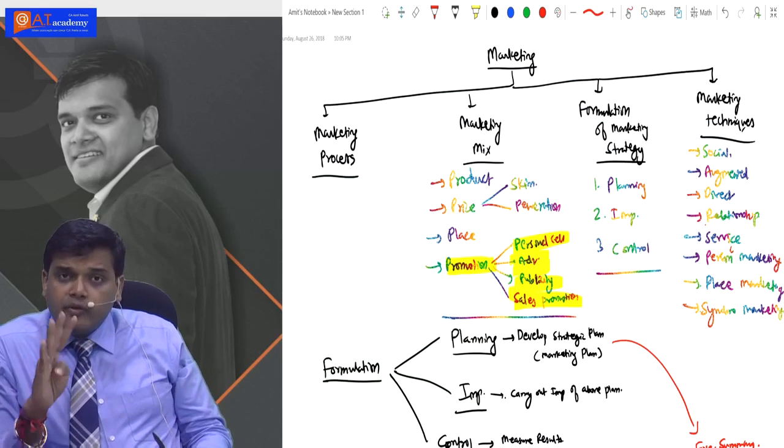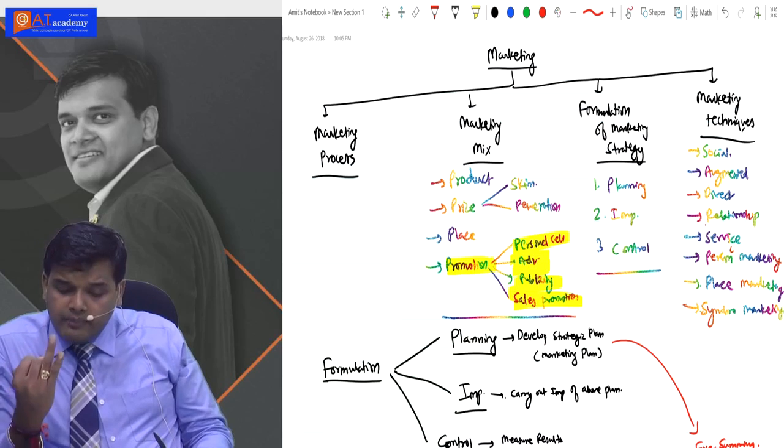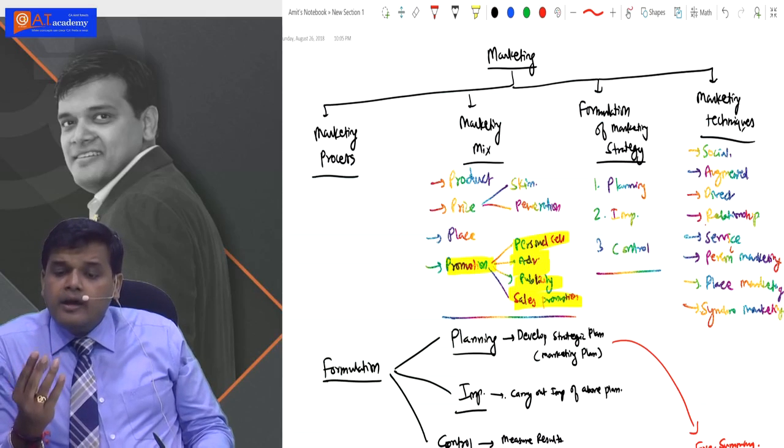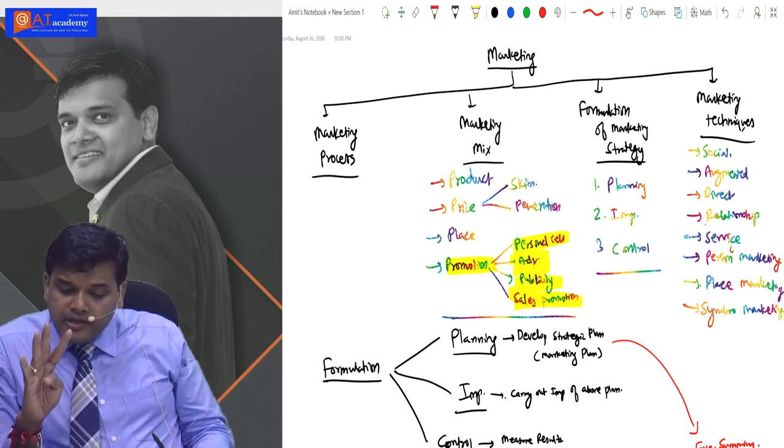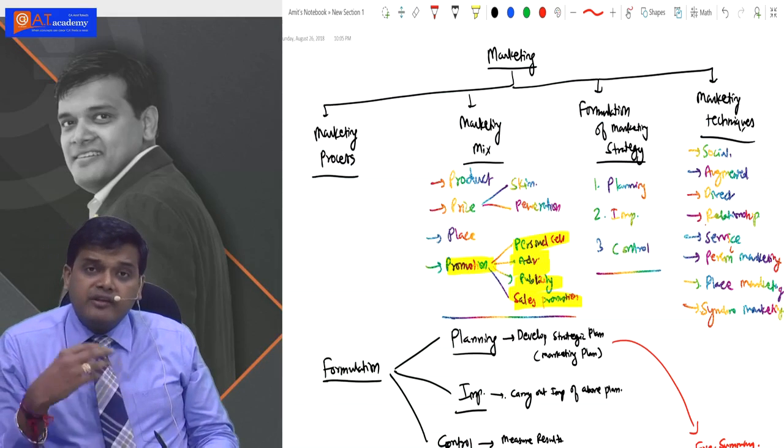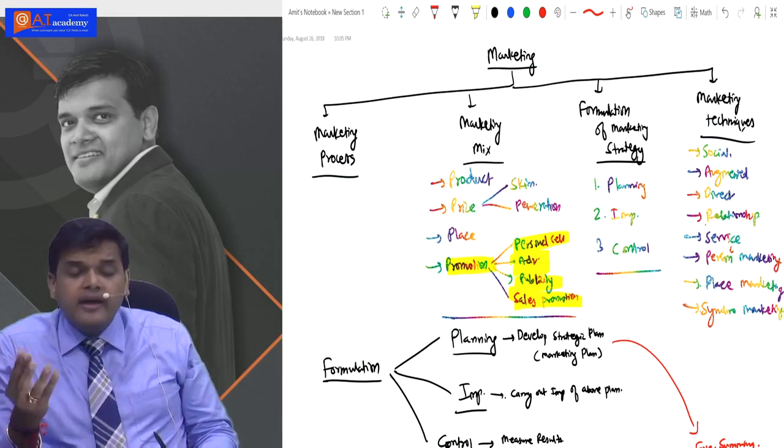Second point, marketing mix - there are four: product, price, place, and promotion. In pricing, we studied two things: skimming and penetration. In promotion, we studied four things: personal selling, advertising, publicity, and sales promotion.